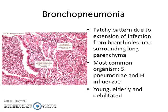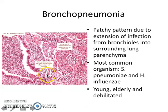The most common organism in bronchopneumonia is Streptococcus pneumoniae, followed by Haemophilus influenzae, and it has a predilection for the young, elderly, and debilitated. Histologically, we see infiltration of neutrophils within the bronchial lumen and also within the alveolar lumen, followed by congested capillaries inside the alveolar epithelium.